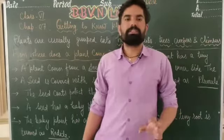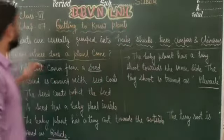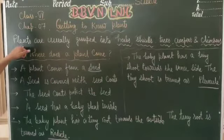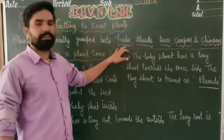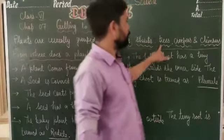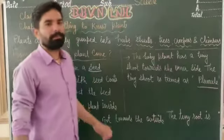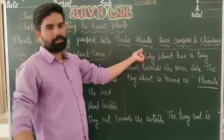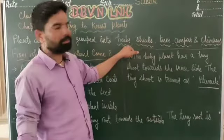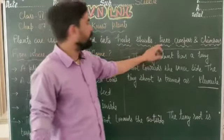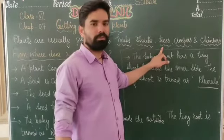उस classification को जानने के लिए अपन इस chapter को पढ़ते हैं। Plants are classified into five categories: herbs, shrubs, trees, creepers, and climbers. जो छोटे plants होते हैं उनको herbs कहते हैं।